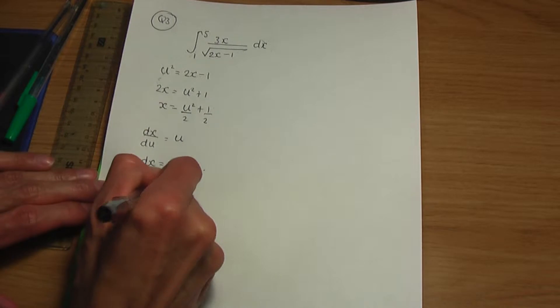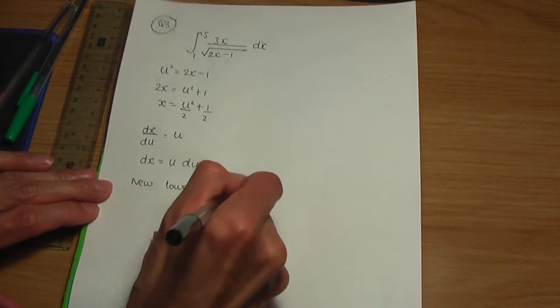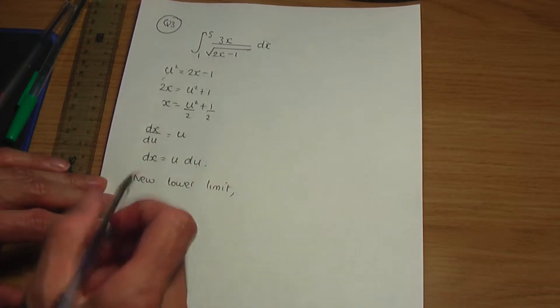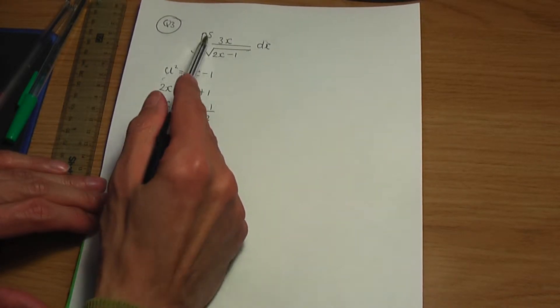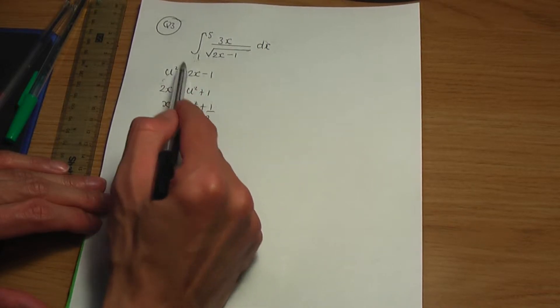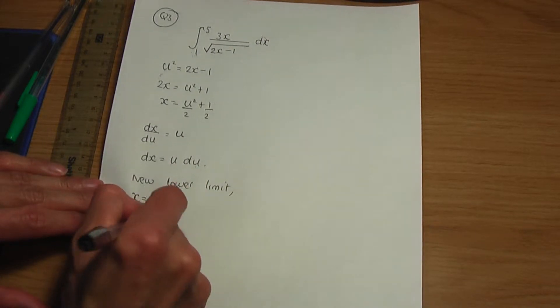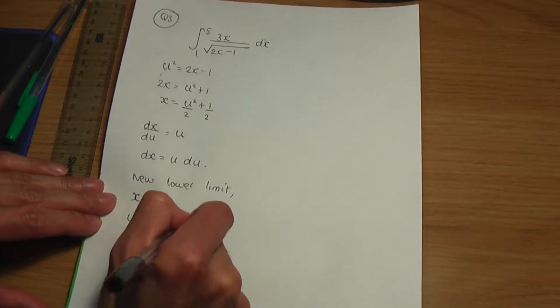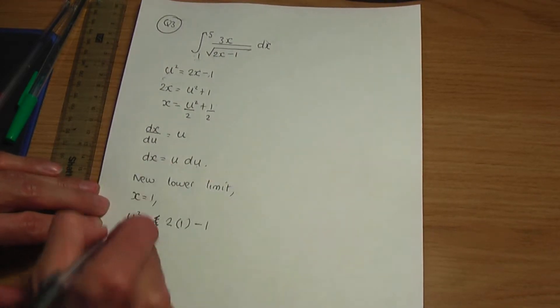To work out the new lower limit, it's very straightforward. Take the old lower limit. The old lower limit is x, which is 1. These are the limits for x. So, the old lower limit is x equals 1. Put that into your substitution. u squared will be 2 into x, which is 1, minus the 1.